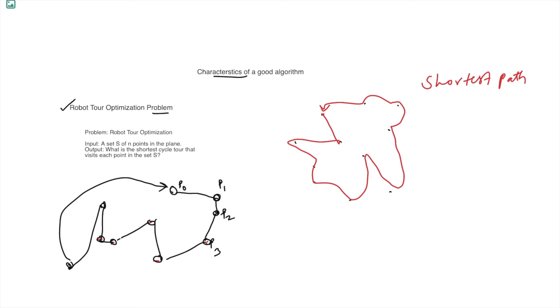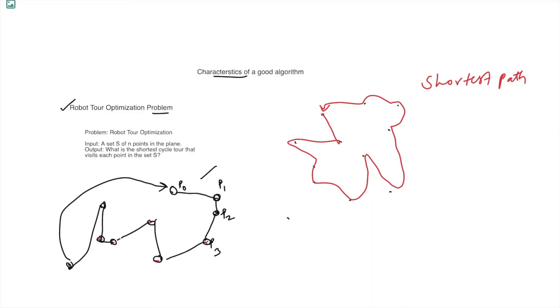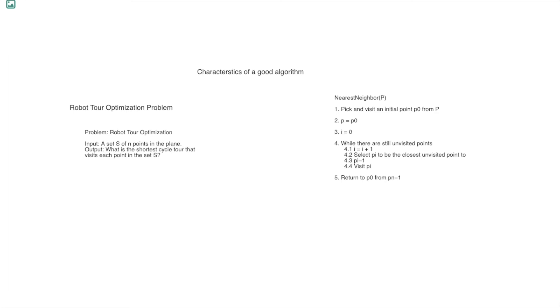We can write this algorithm as: pick any initial point P0; set the current point P as P0; for i equal to 0, while there are still unvisited points, increment i and set Pi as the closest unvisited point.